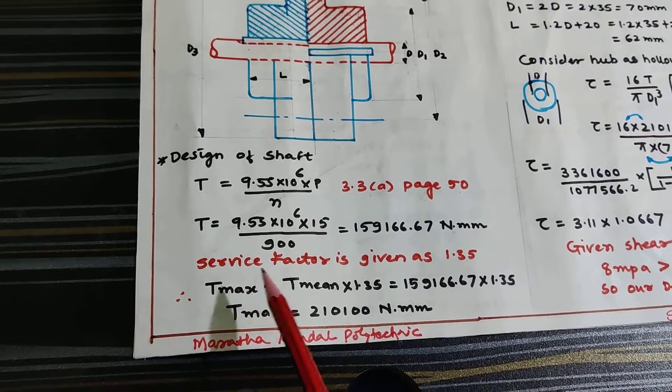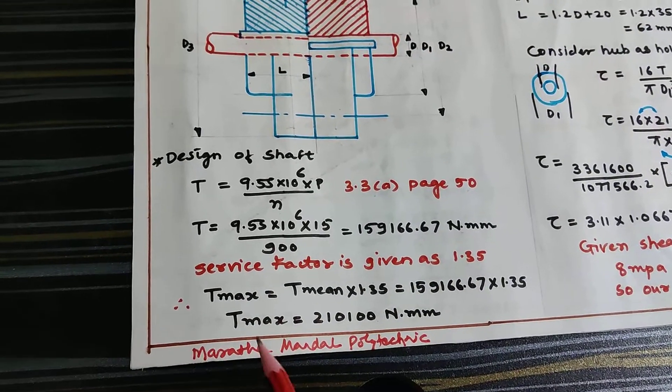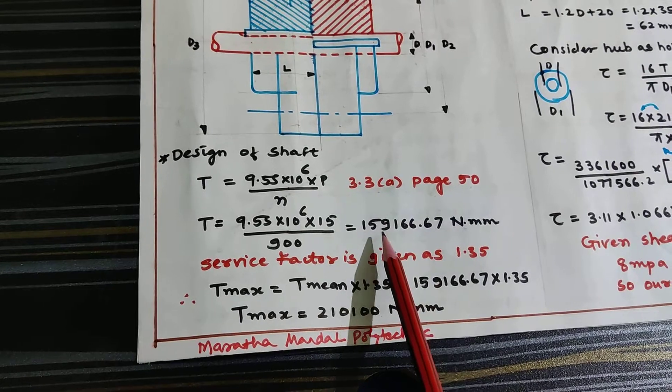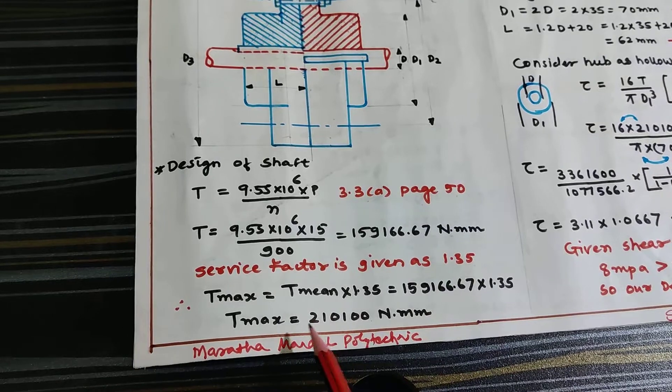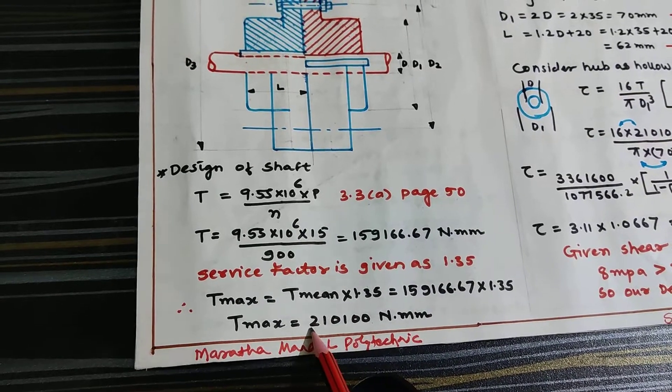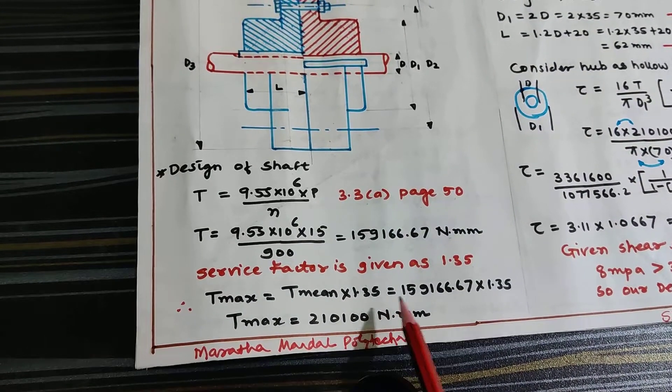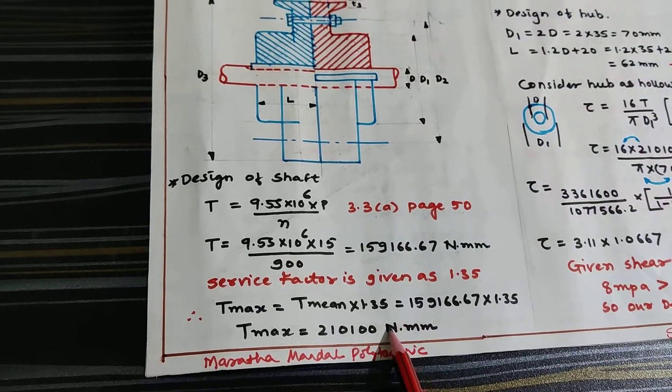In the problem, they have given a service factor, that is 1.35. This means whatever torque we are generating, we have to multiply that with 1.35, so we will get maximum torque. By considering this, we have to find out the shaft diameter.